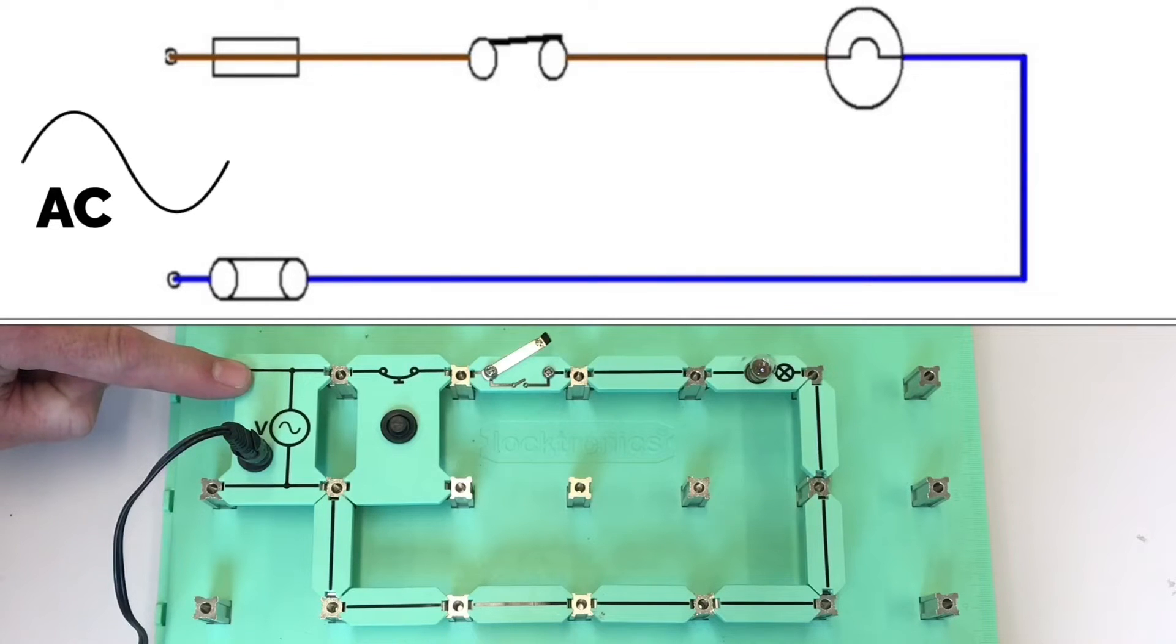So we have here the source of EMF, electromotive force, and we've got the picture of a sine wave. So we have an AC supply in this circuit.